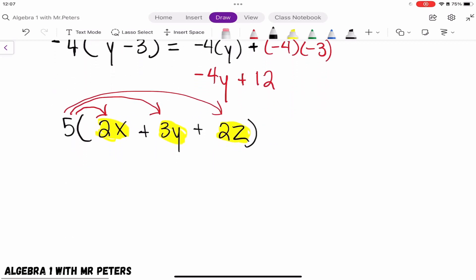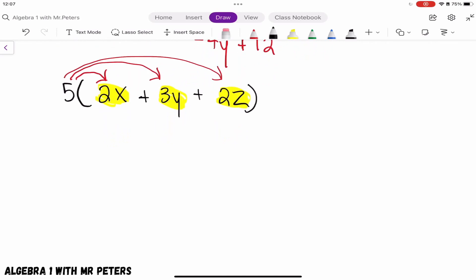5 times 2x plus 5 times 3y plus 5 times 2z. Once we go through, we're only going to multiply the numbers and keep the variable. So we'll have 10x + 15y + 10z. Like we said before, none of these variables are the same, so we can't add them.